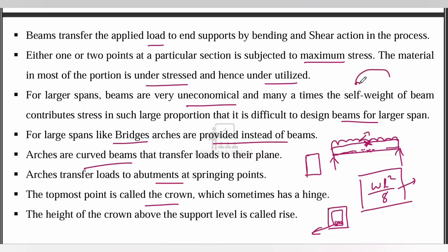When a hinge is provided at the crown and at both supports, those are 3-hinged arches. When there is a hinge provided only at the supports with no hinge at the center crown point, those are 2-hinged arches. The height of the crown above the support level is called the rise — that vertical distance.